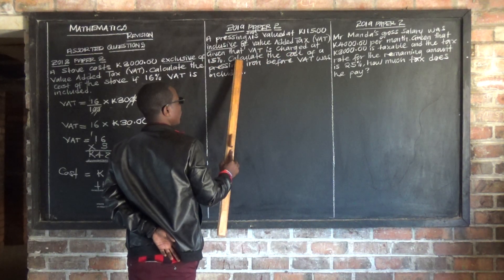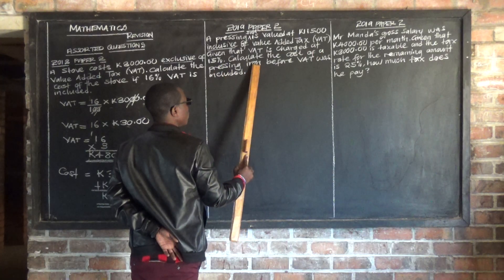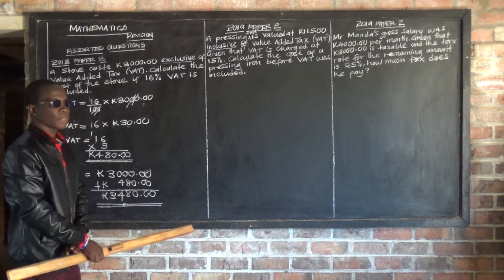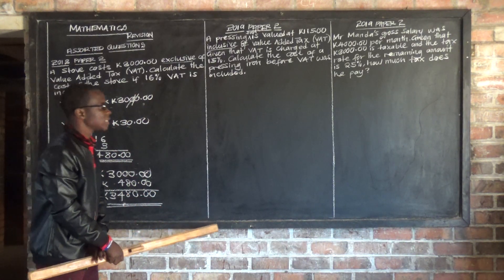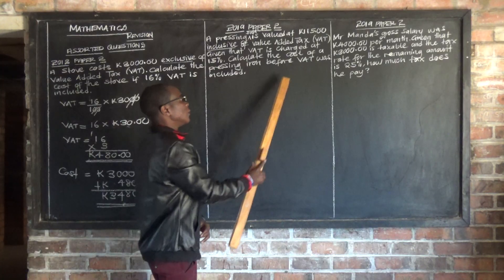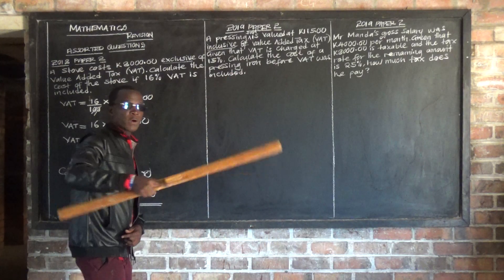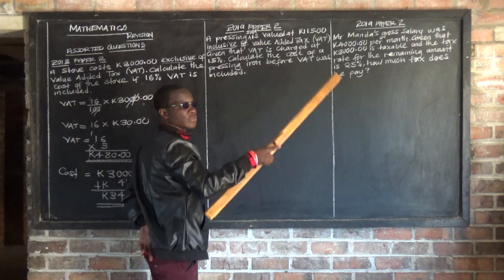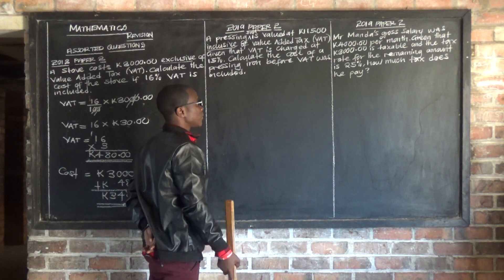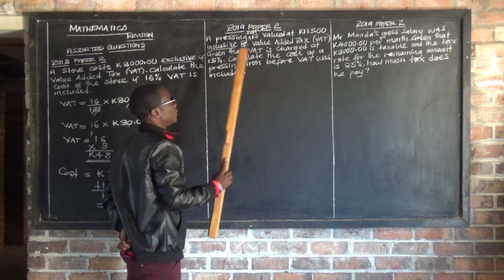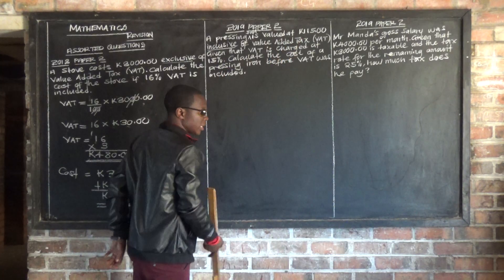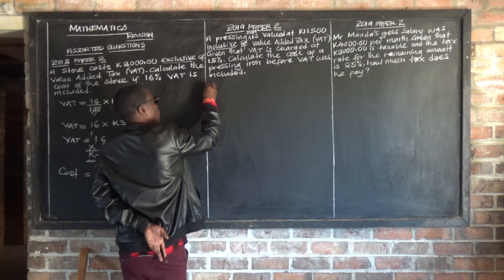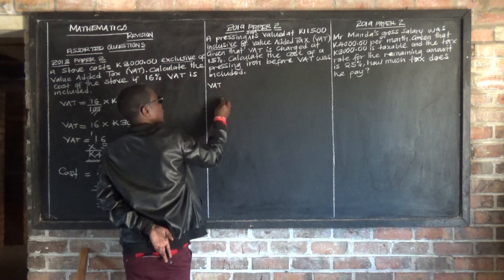Given that value added tax is charged at 15%, calculate the cost of the pressing iron before VAT was included. So before including the 15% VAT, what was the original price of the pressing iron? Step one: we need to find 15% working from the inclusive price.